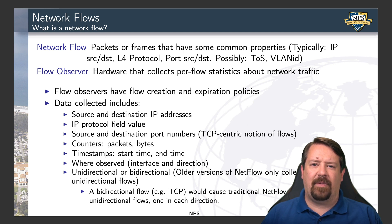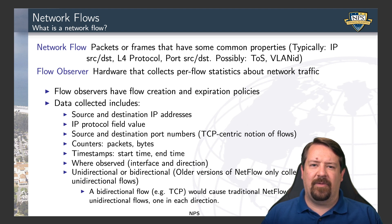These flows are defined as representing a set of packets or frames that have some common properties. Usually, these share a source and destination IP address, a source and destination layer four port number, and potentially other fields as well. So in the output of this collection, rather than having a record for every single packet, there is a single record for a flow, and then some counters that allow for further analysis of the flows.